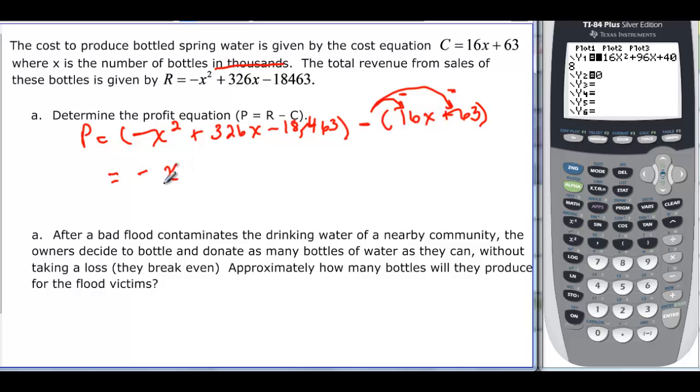Negative x squared stays, but 326 minus the 16x of both x's gives me plus 310x. I know I could have done that in my head. And then negative 18,463 minus 63 more gives me minus 18,526. So that's my new equation.